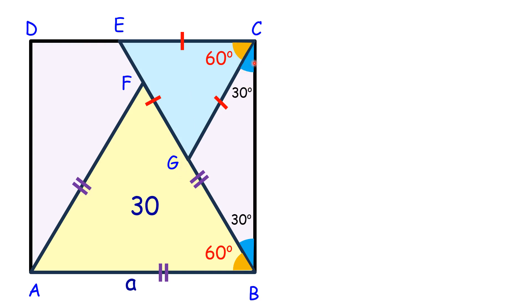For triangle GCB, two angles are equal, so this is an isosceles triangle.